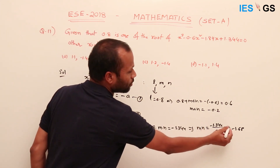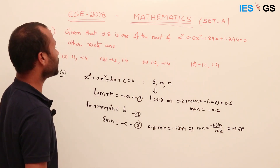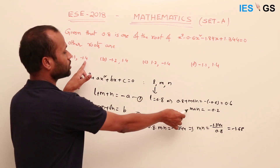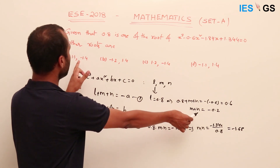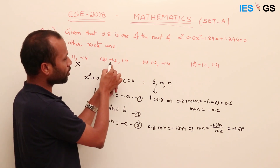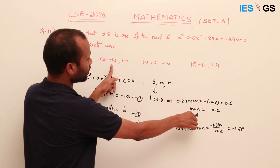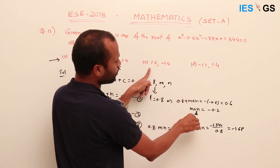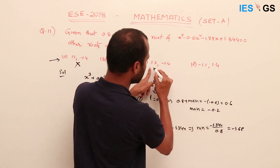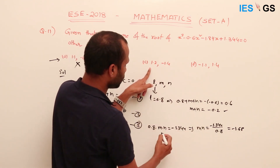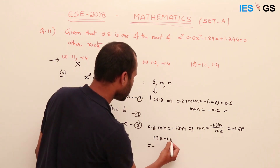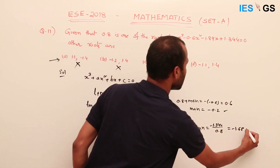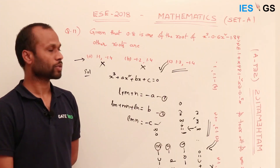Rather than solving algebraically, in these examinations substitute the given options. Option: 1.1 and minus 1.4 gives sum minus 0.3 — wrong. Option: minus 1.2 and 1.4 gives sum plus 0.2 — wrong. Option: 1.2 and minus 1.4 gives sum minus 0.2 — correct. Check product: 1.2 times minus 1.4 equals minus 1.68 — also correct. So the correct option is C.